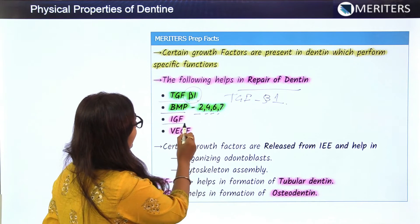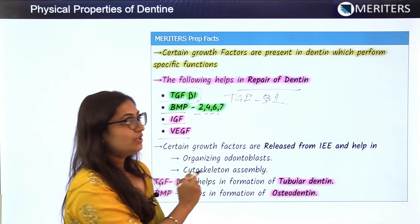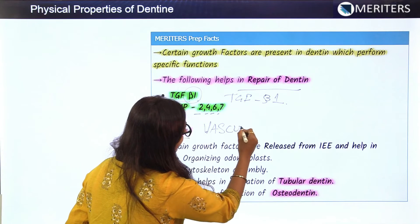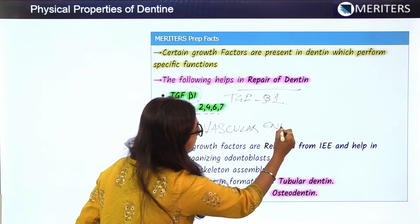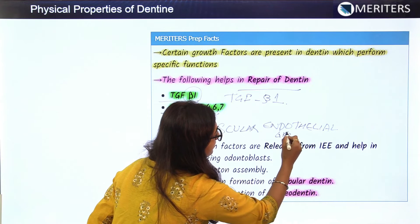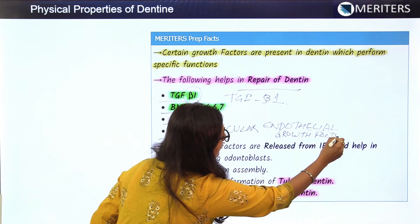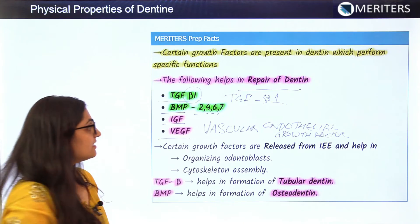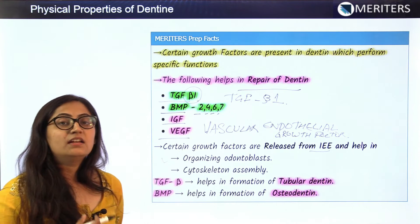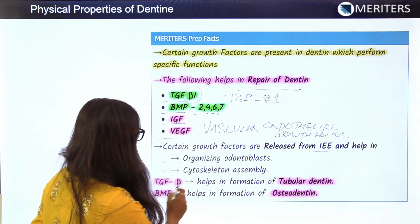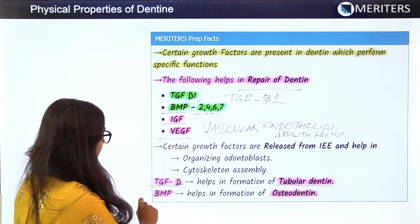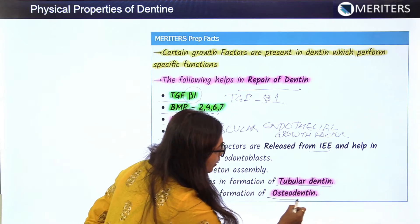Additional growth factors include insulin-like growth factors and vascular endothelial growth factors. Certain growth factors are released from the inner enamel epithelium and help in organizing the odontoblasts in cytoskeletal assembly. Transforming growth factor beta helps in the formation of tubular dentine, while bone morphogenetic protein helps in the formation of osteodentine.